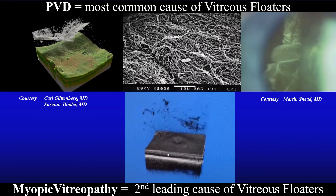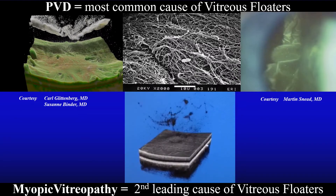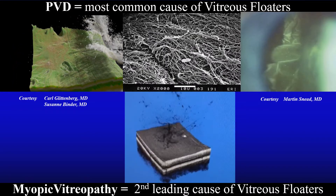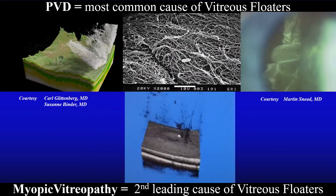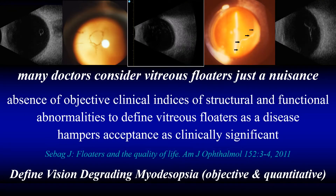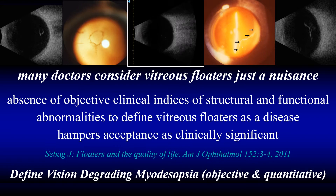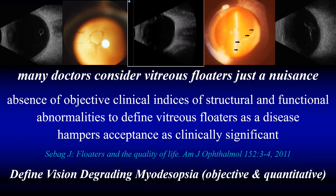Aggregates of collagen in the vitreous body interfere with the transmission of photons to the retina, resulting in shadows that patients see as floaters, and sometimes they are very bothersome. However, many doctors consider vitreous floaters just a nuisance and not a disease. I believe it's because of the absence of objective clinical indices of vitreous structure and visual function that would enable the definition of vitreous floaters as a disease, and this absence has hampered acceptance of floaters as clinically significant.